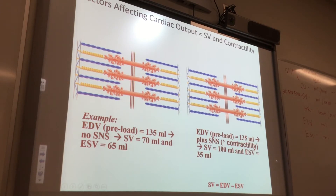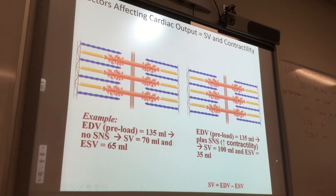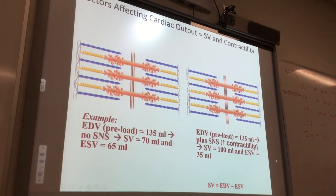But in heart one there's no sympathetic nervous system innervation. In heart two, you do give sympathetic nervous system innervation. The sympathetic nervous system is going to increase contractility. How? Via norepinephrine. Norepinephrine binds to calcium channels — voltage-gated and calcium-gated — on the cardiac contractile cells. More calcium gets in, and you get a stronger force of contraction.